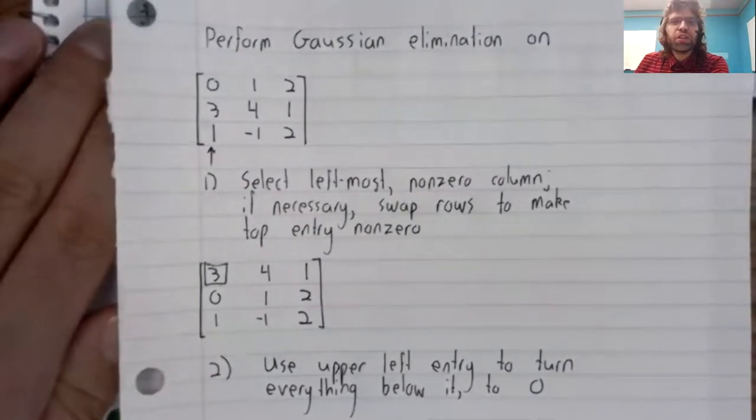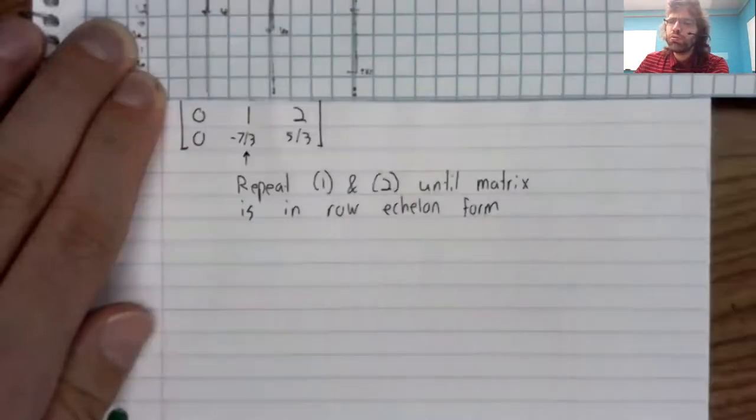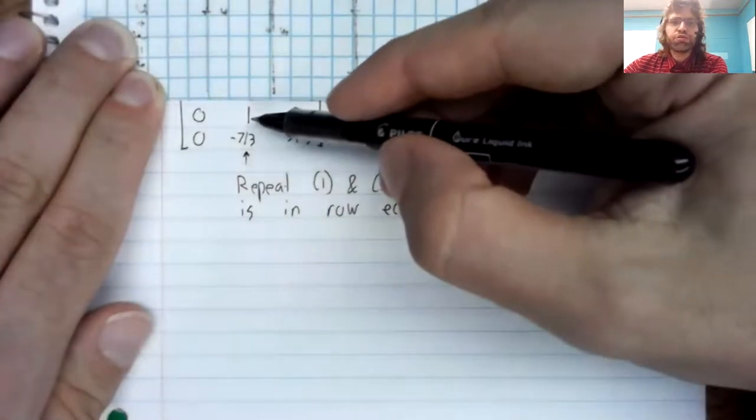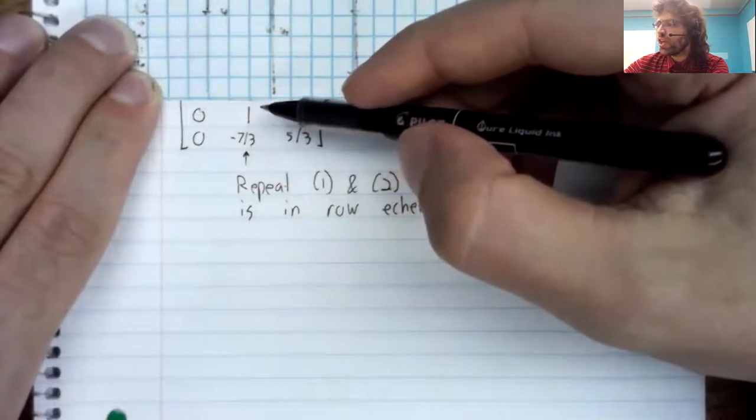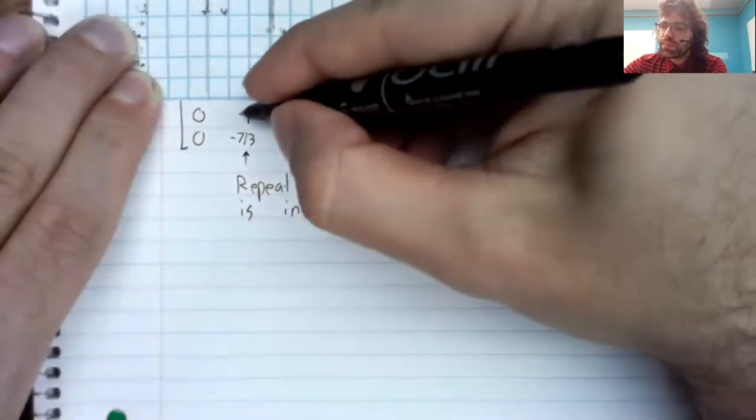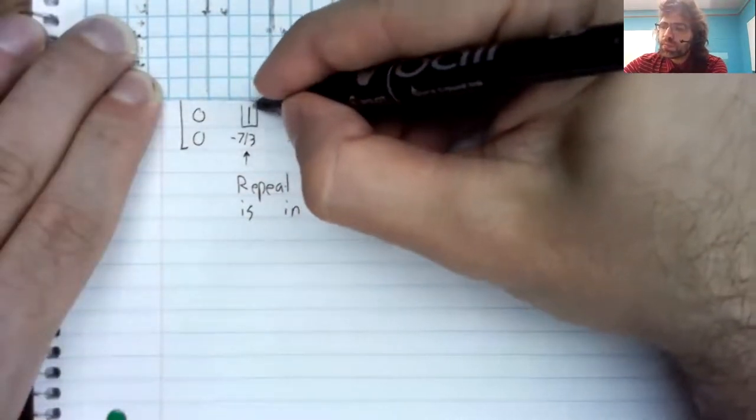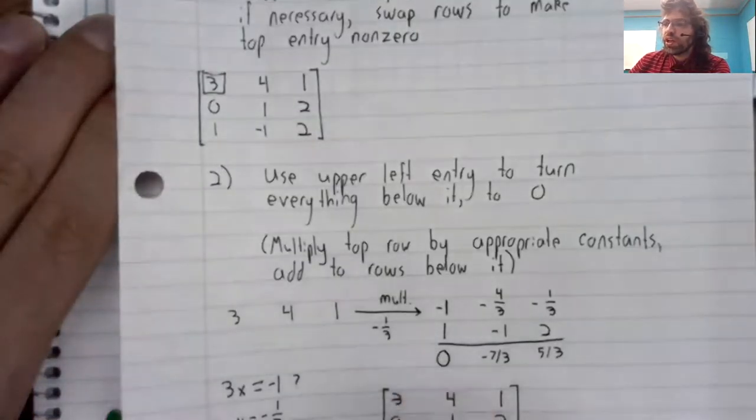If necessary, swap rows to make the top entry non-zero. Now this top entry is already non-zero. So it's not necessary.